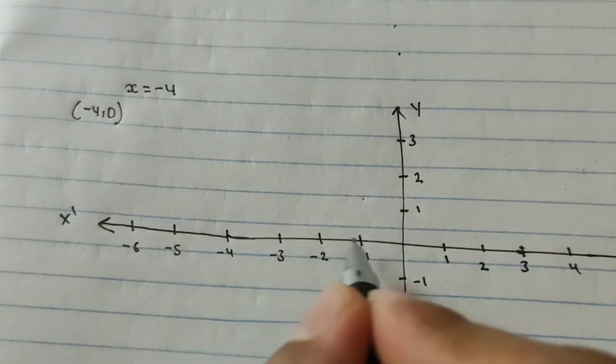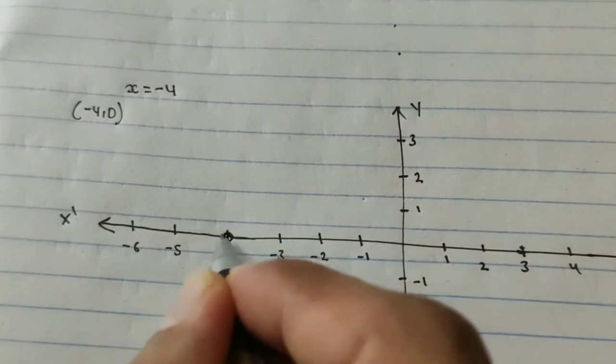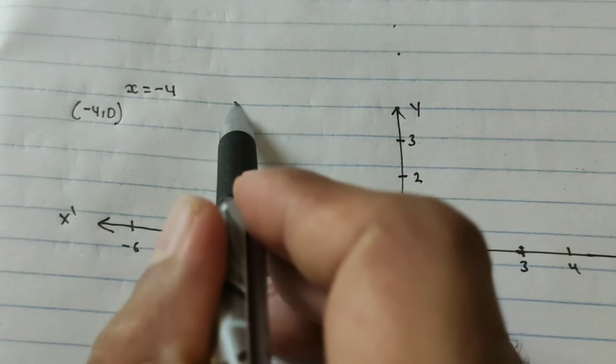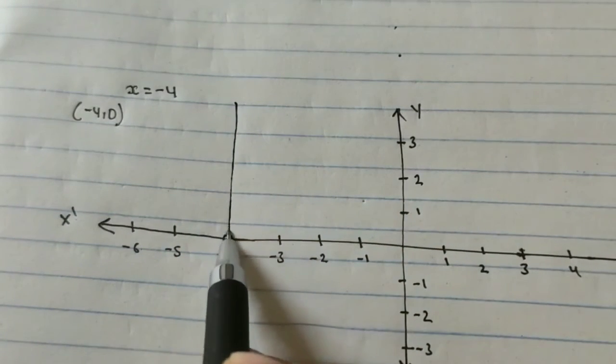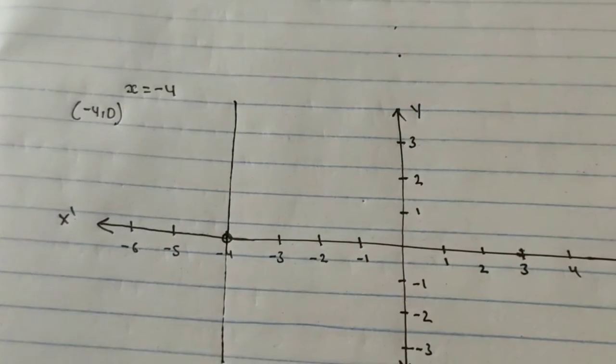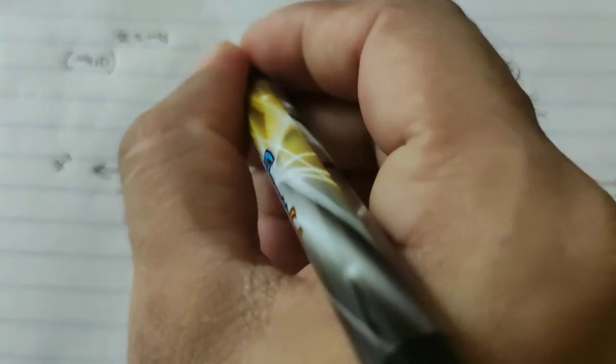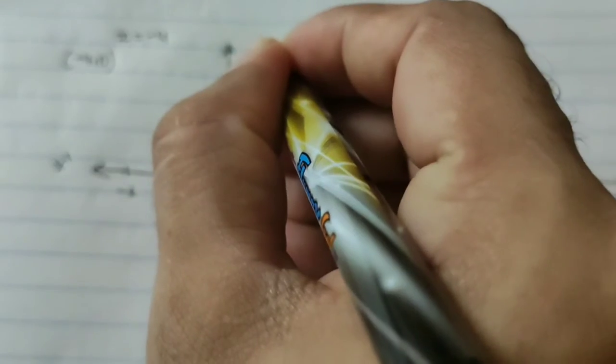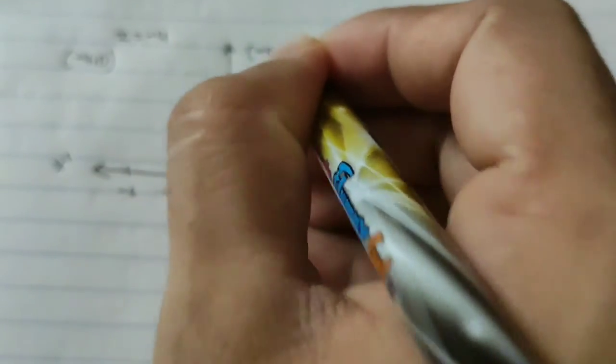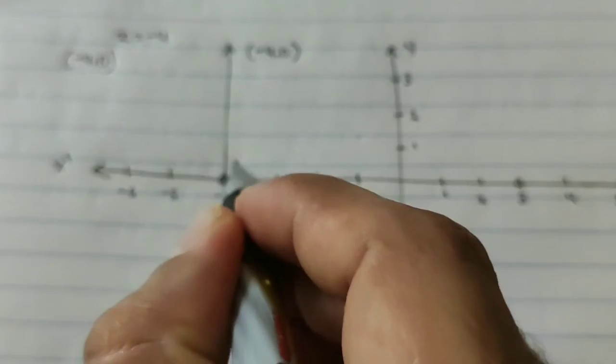So you directly make a parallel line to your y-axis. Got it. And write here (-4, 0) and mark it with the point P or you can write here P like this.